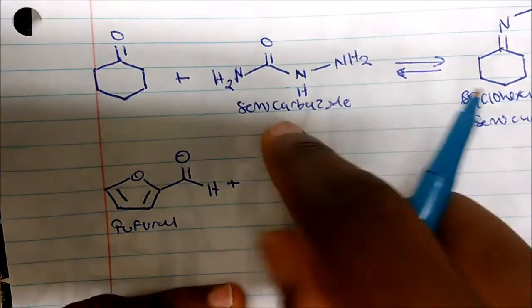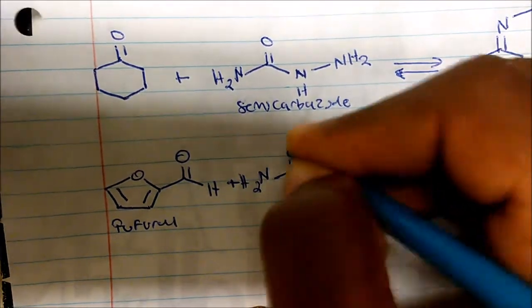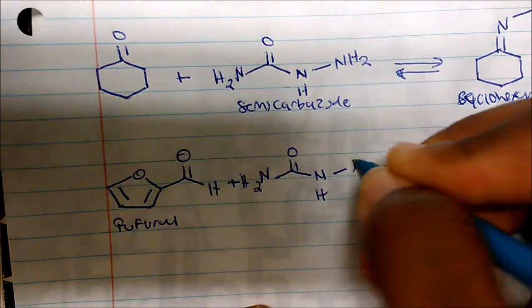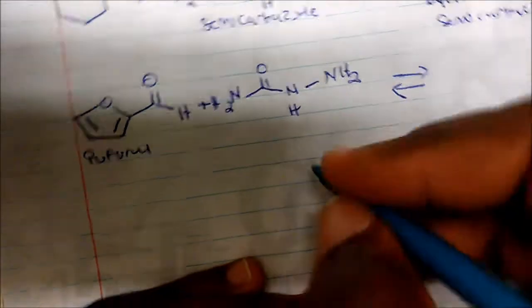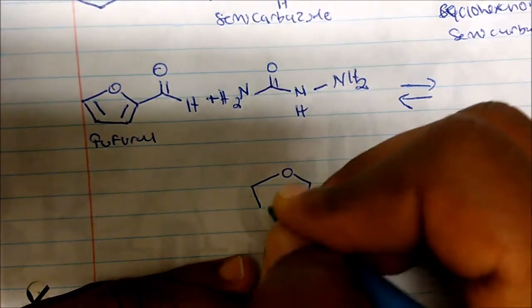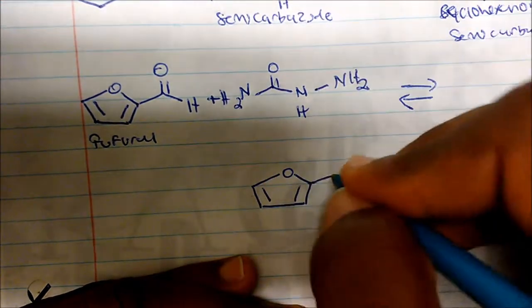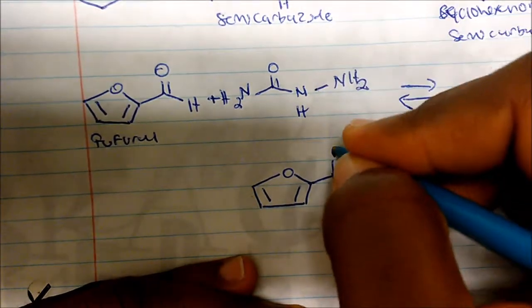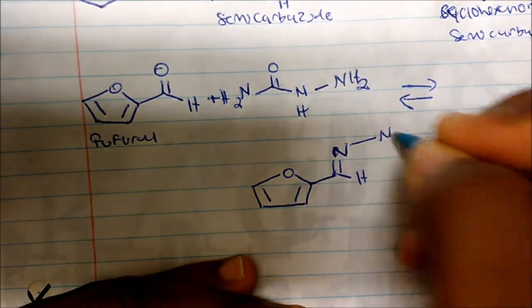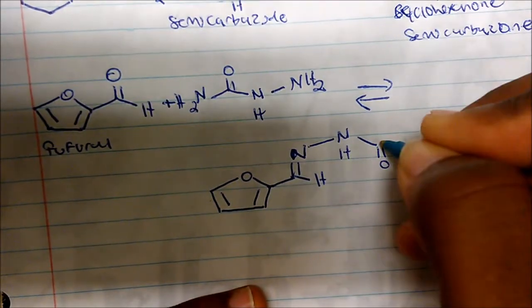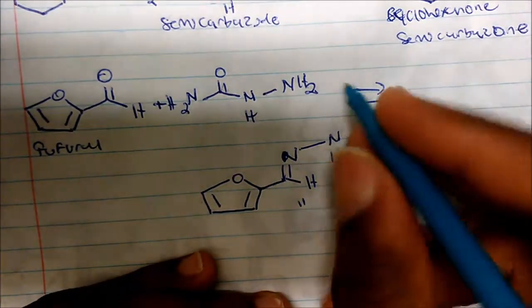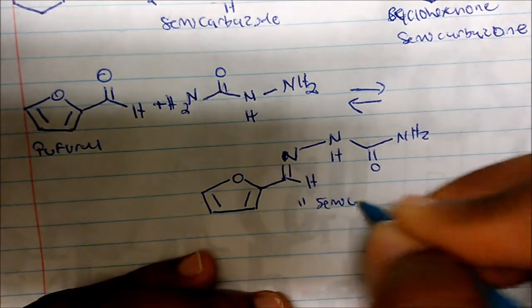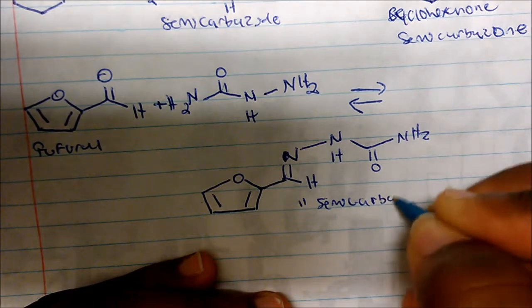So what if you took furfural and added semicarbazide to it? We should know that all we're going to do is again replace the oxygen. The product we get for this reaction — there's the hydrogen, we lose two hydrogens, and we draw the structure that remains. This is called 2-furanaldehyde semicarbazone.